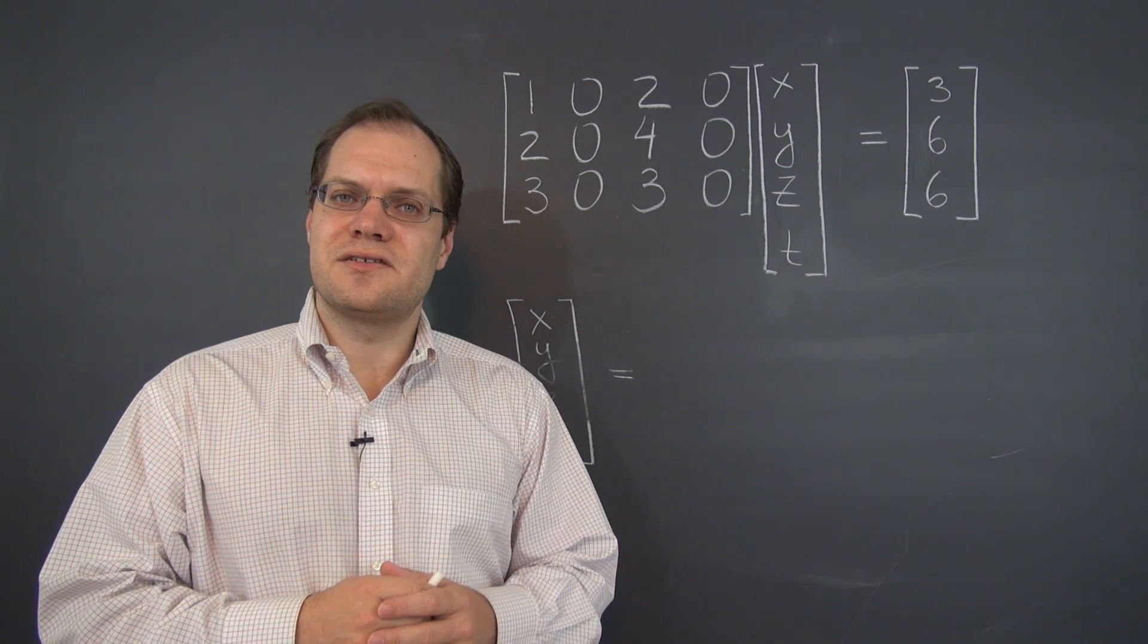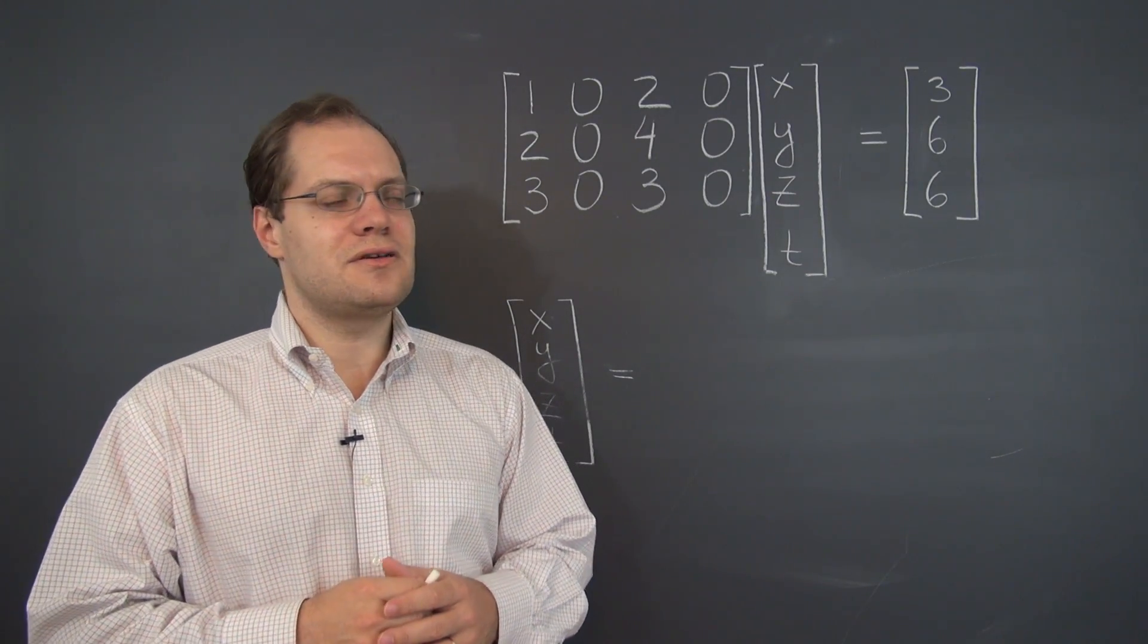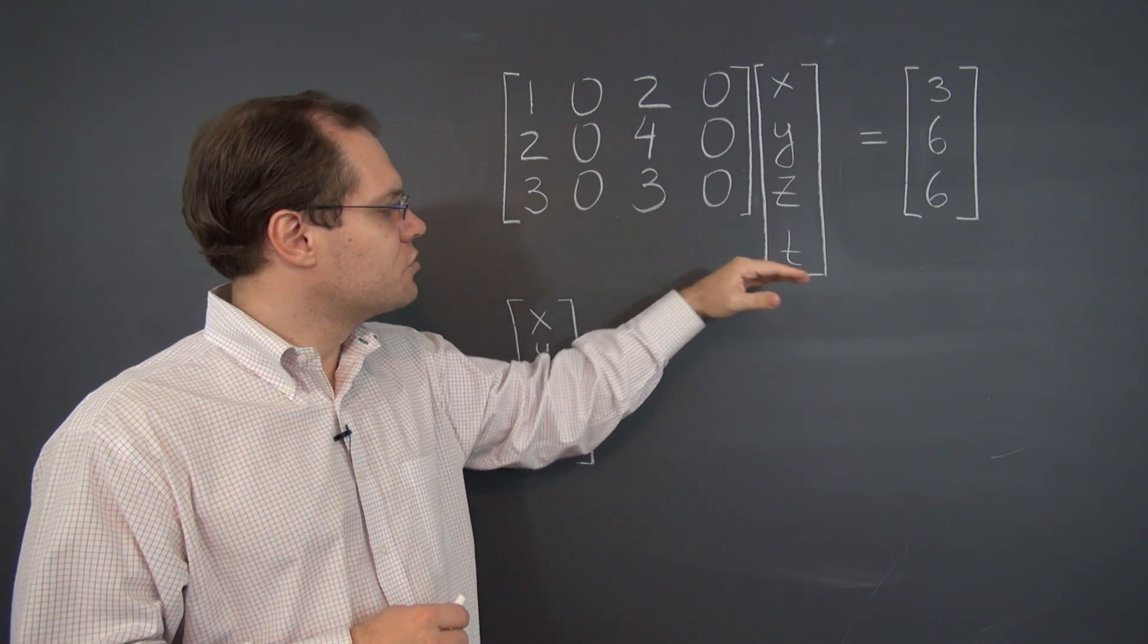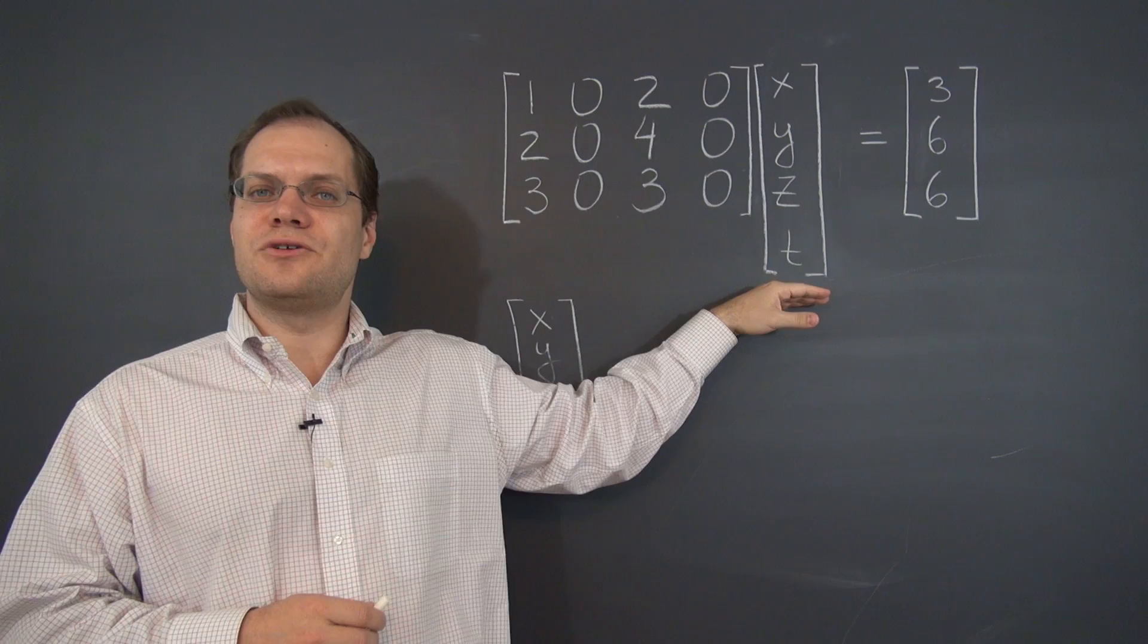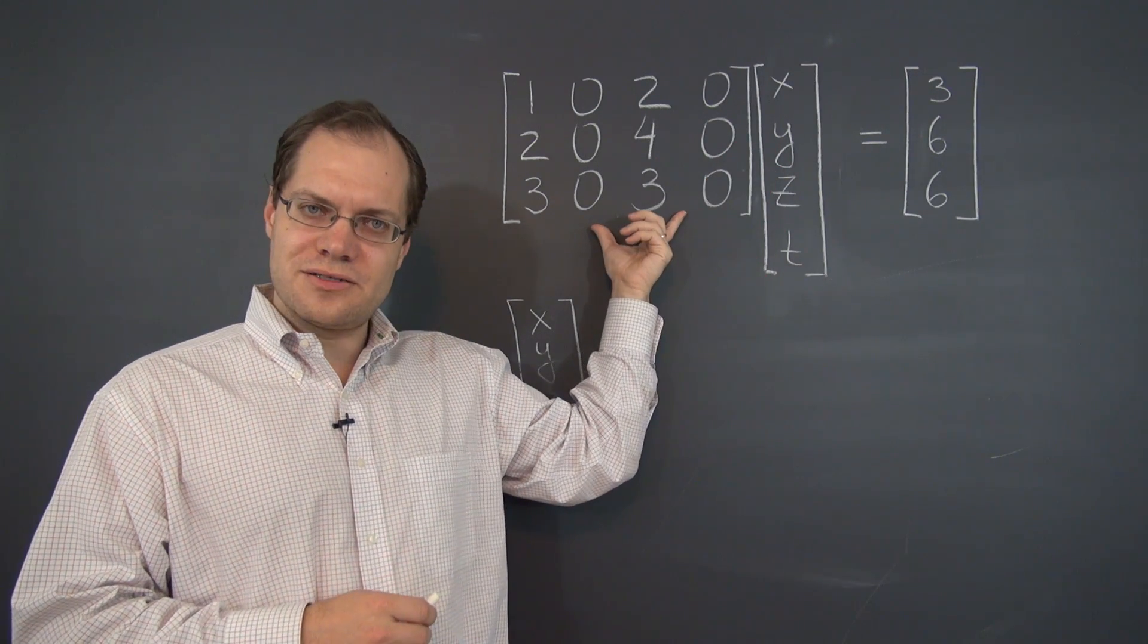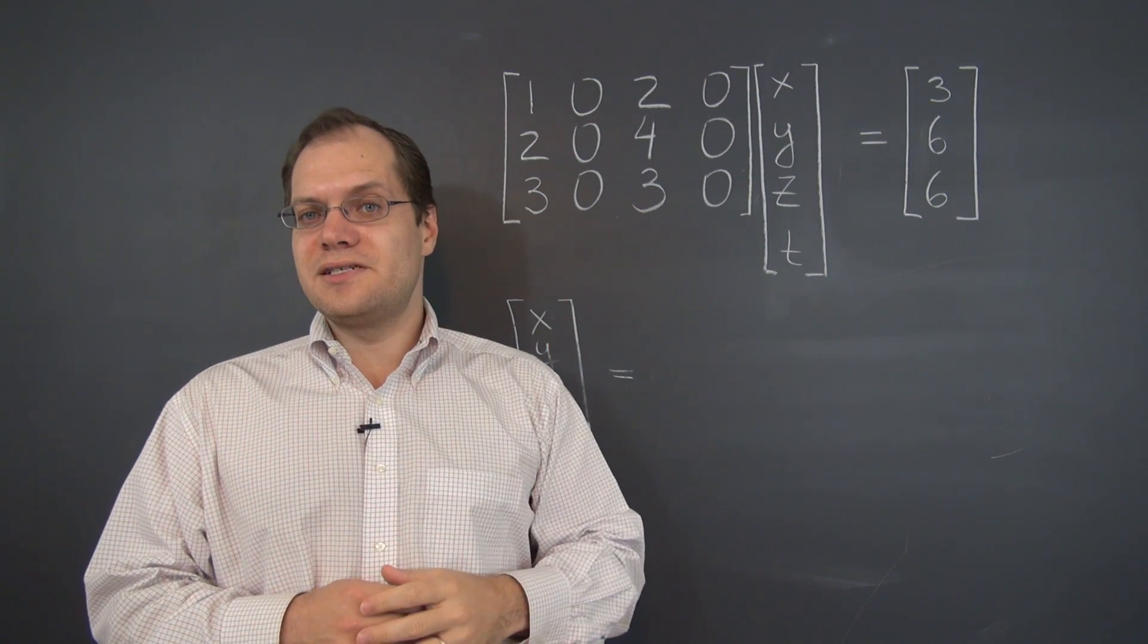Let's talk about this interesting system. What makes this system interesting is the two columns of zeros. You will find that if you rewrite the system as a collection of equations, then the variables y and t that correspond to the zero columns aren't even participating.